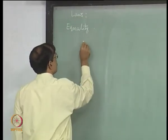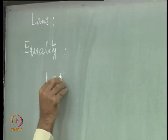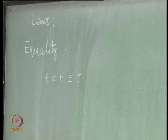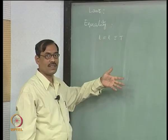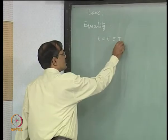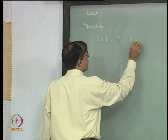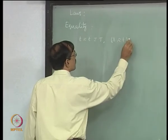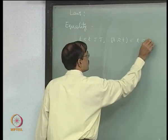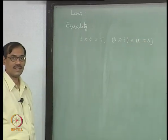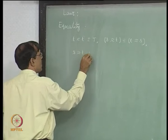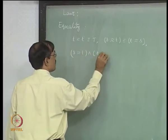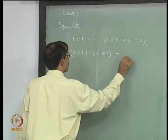In laws of equality, you will have, say, t equal to t. This is valid. It is obvious, because the equality symbol is interpreted as the equality in the domain. Some such simple things can be seen very quickly. For example, s equal to t is equivalent to t equal to s. There is nothing more to do. Similarly, s equal to t and t equal to r entails s equal to r.